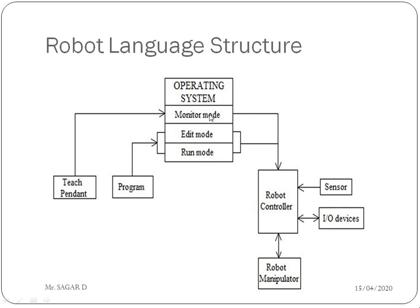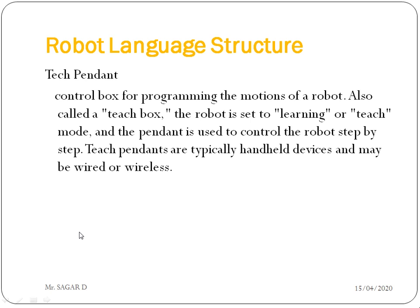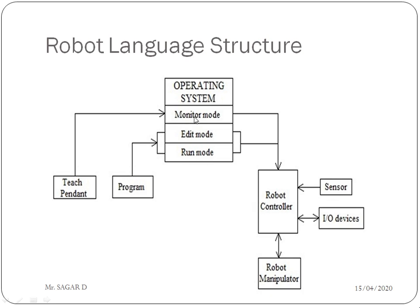This operating system is connected to a robot controller. The robot controller takes sensor data as input, processes that data, and on the basis of that data controls the movement of the manipulator. It also has input/output devices. The teach pendant is a control box for programming the motion of the robot, also called a teach box. It is connected to the monitor mode in the system.